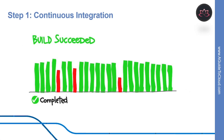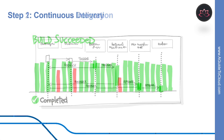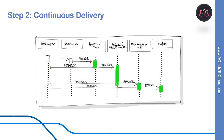The first step is continuous integration, which drives the ongoing merging and testing of code, leading to finding defects early. Other benefits include less time wasted on fighting merge issues and rapid feedback for development teams. The second step is continuous delivery of software solutions to production and testing environments, which helps organizations quickly fix bugs and respond to ever-changing business requirements.